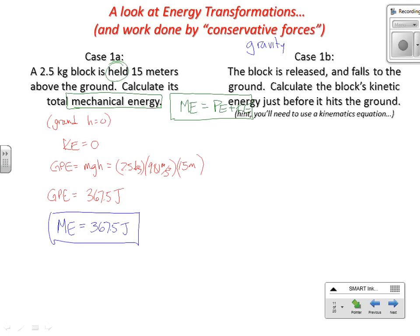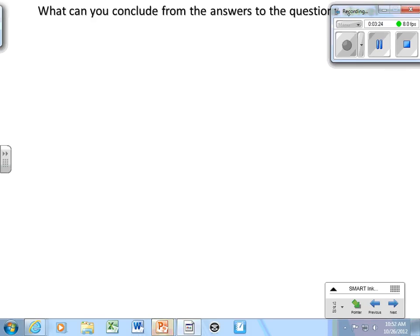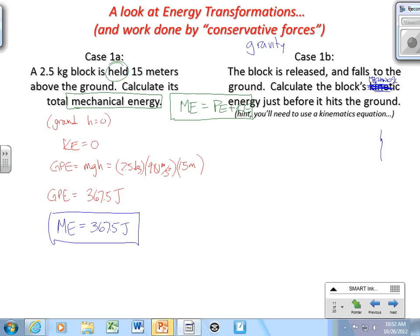Now this block is released and falls to the ground. Let's find its total mechanical energy just before it hits the ground. Just before it hits the ground tells us that GPE is zero. So we want to know what KE is, which is one half MV squared, but we want to know what the velocity is.